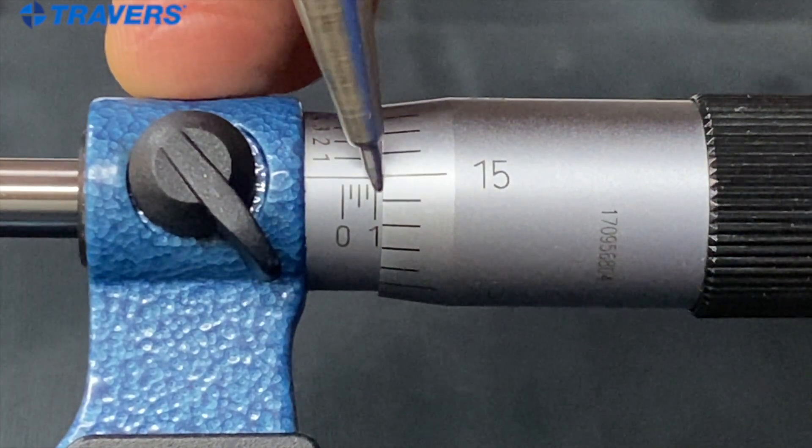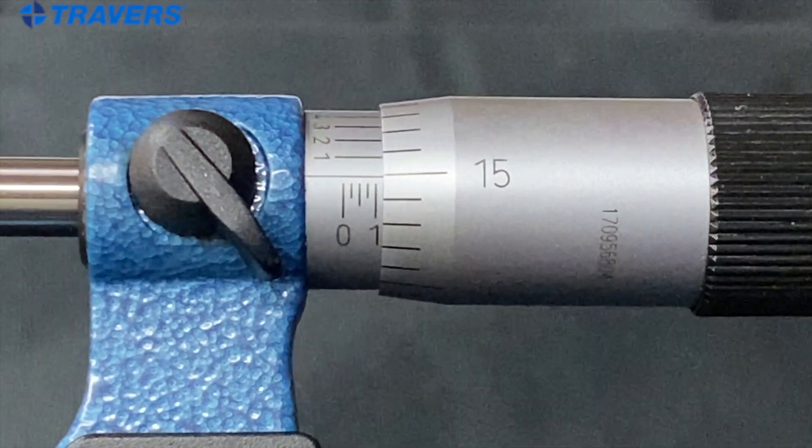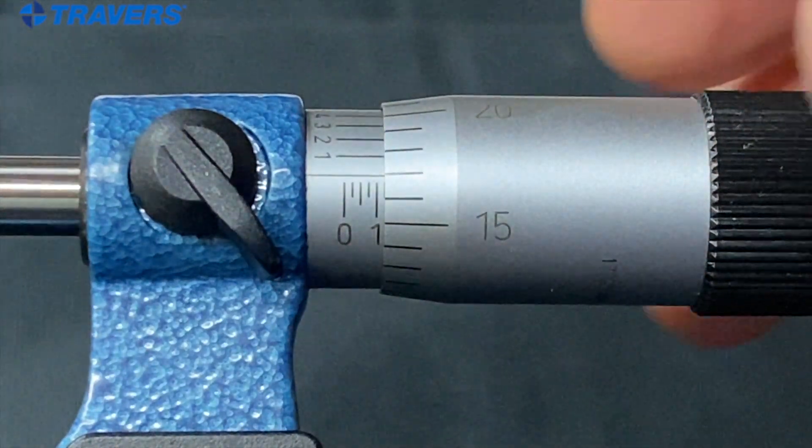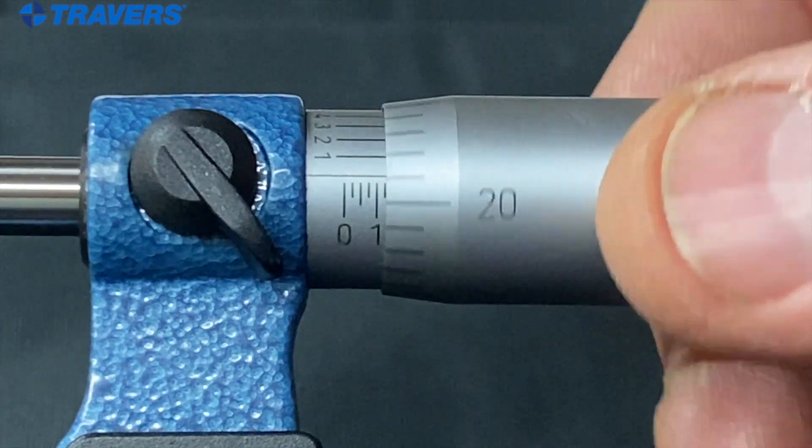We have the hundred thousandths down here, fifteen thousandths up there. That would be a hundred seventeen thousandths and so on.